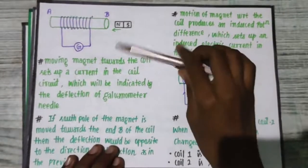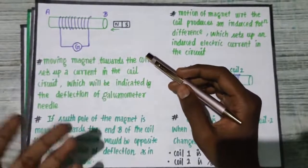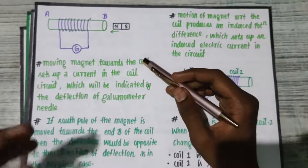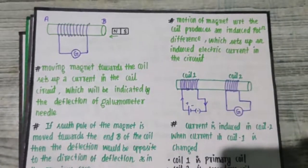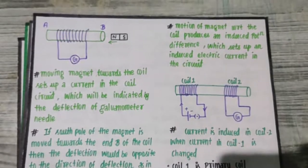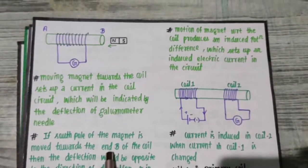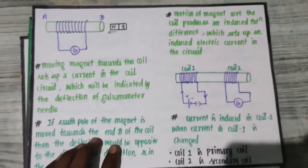Now the direction of the current is going to be different when you compare to the same scenario of moving the south pole of the magnet towards the end B of the coil. If you end B and south pole of the magnet are going to be the same direction.